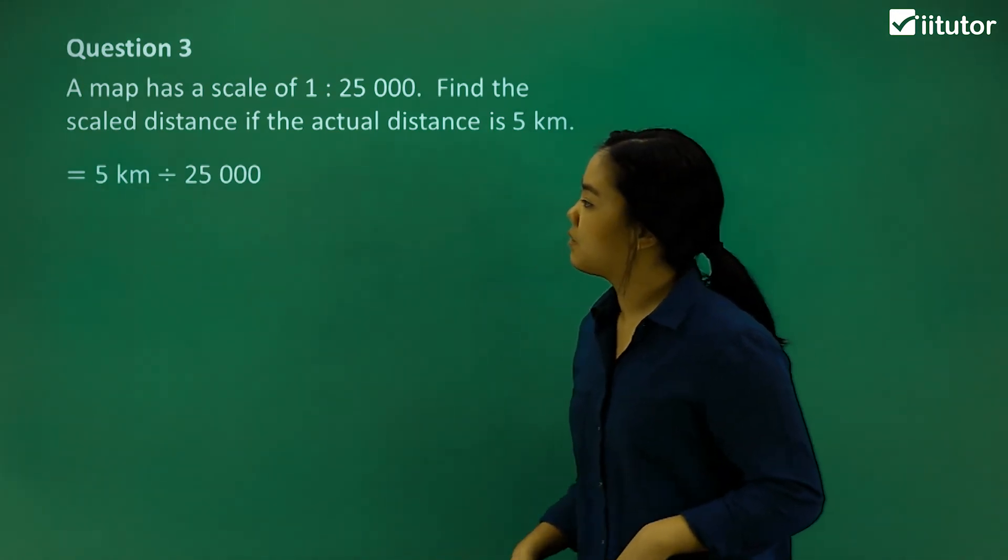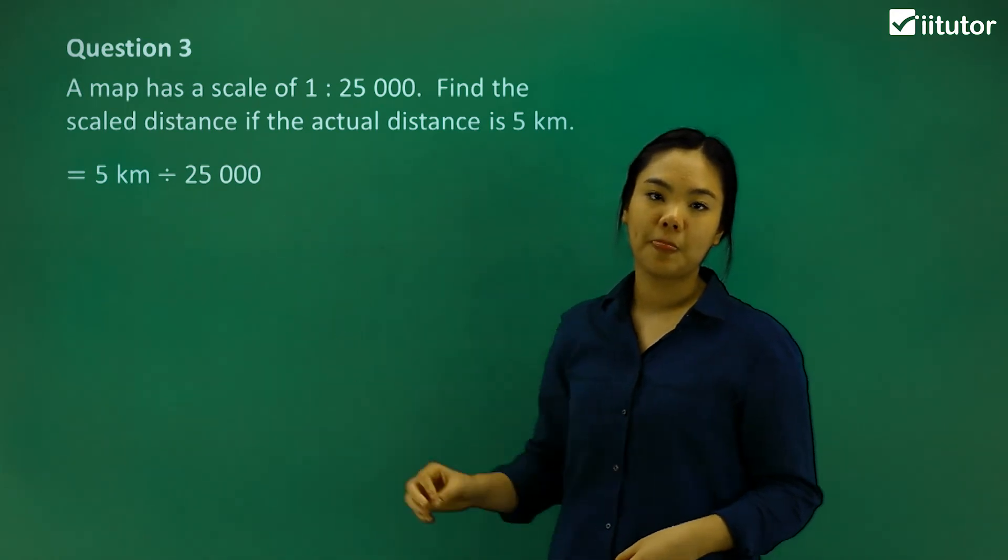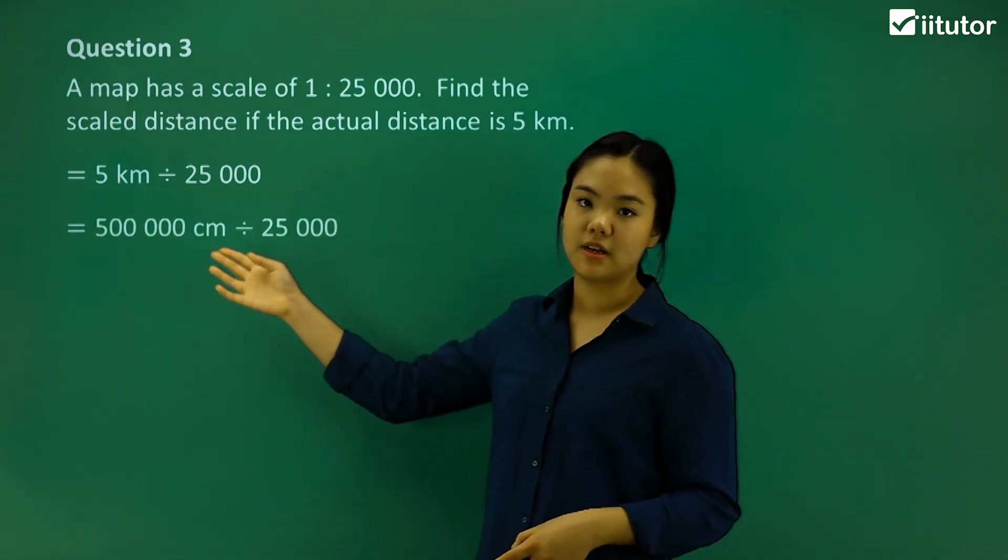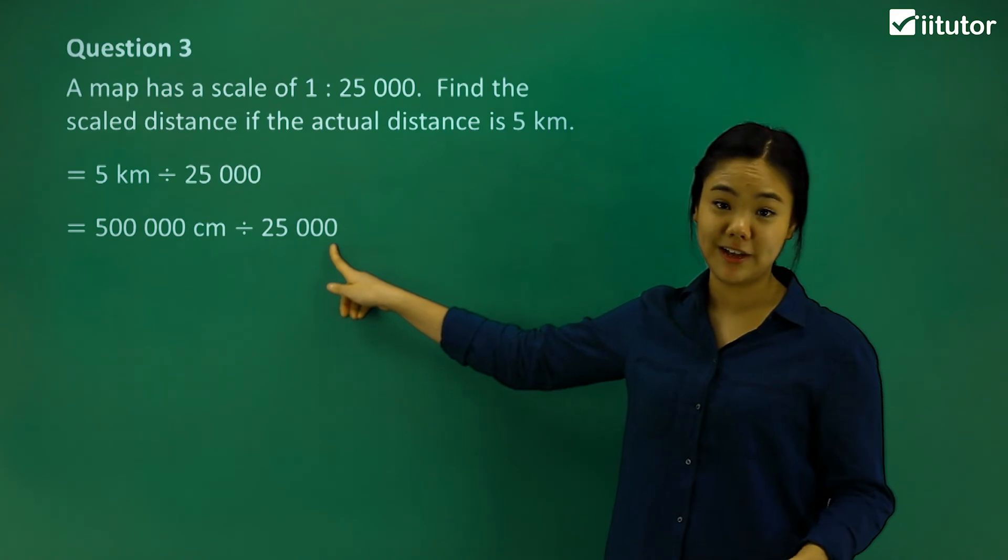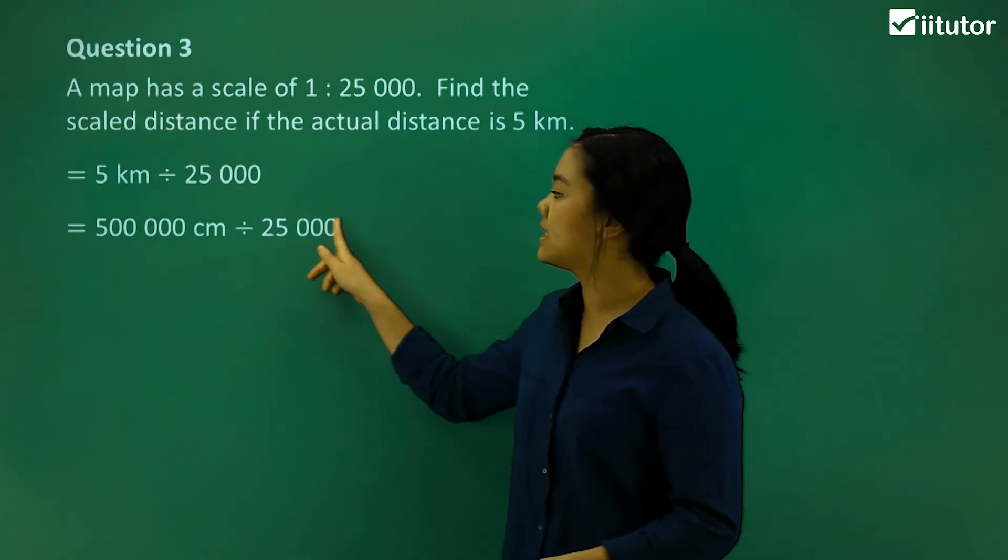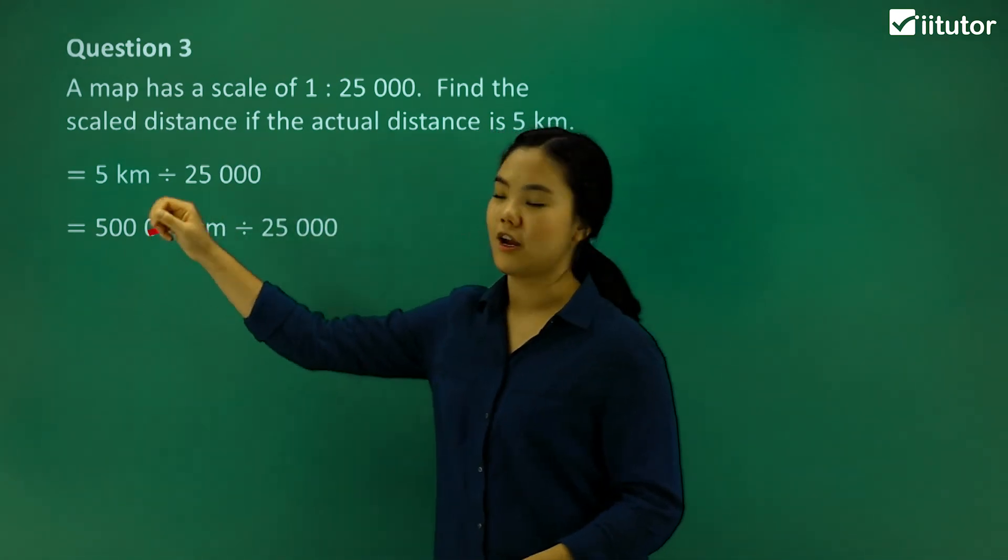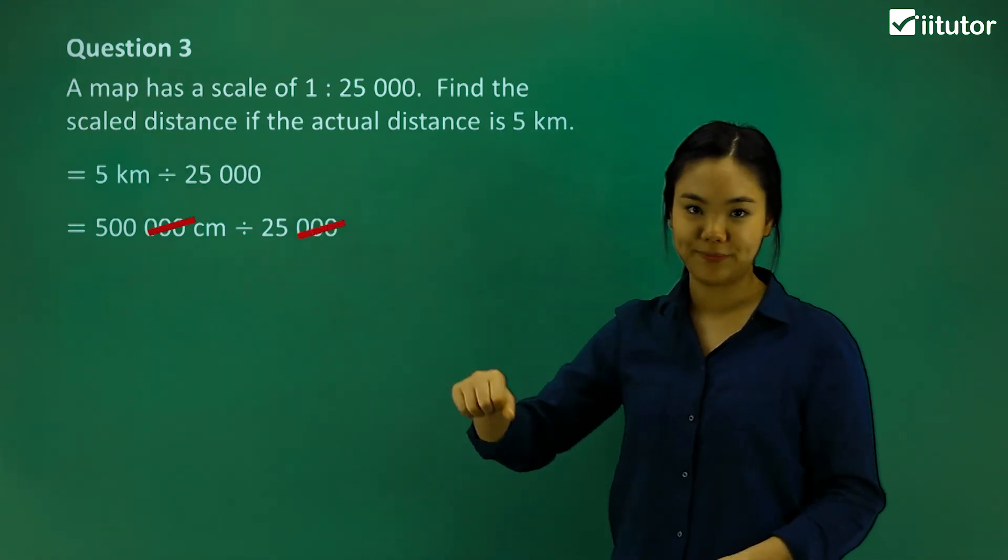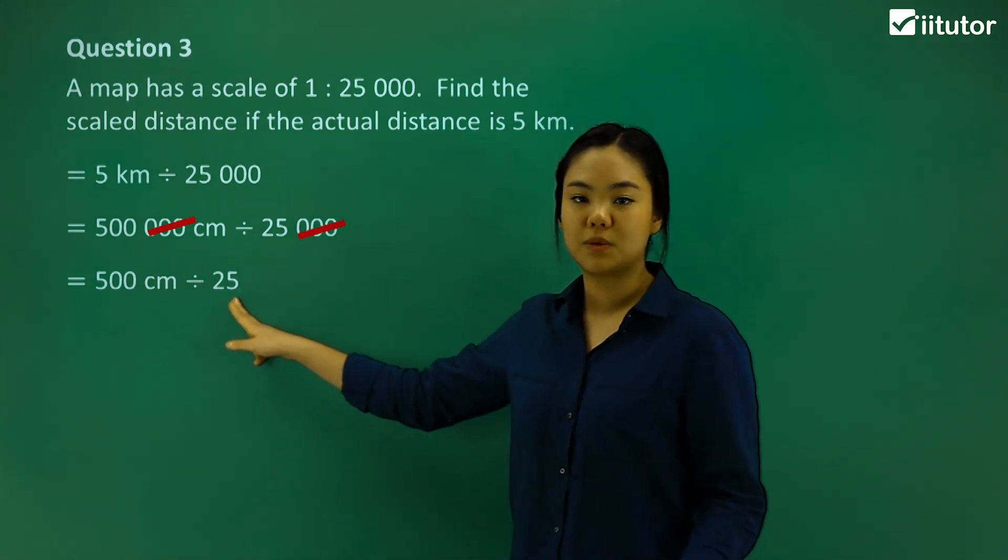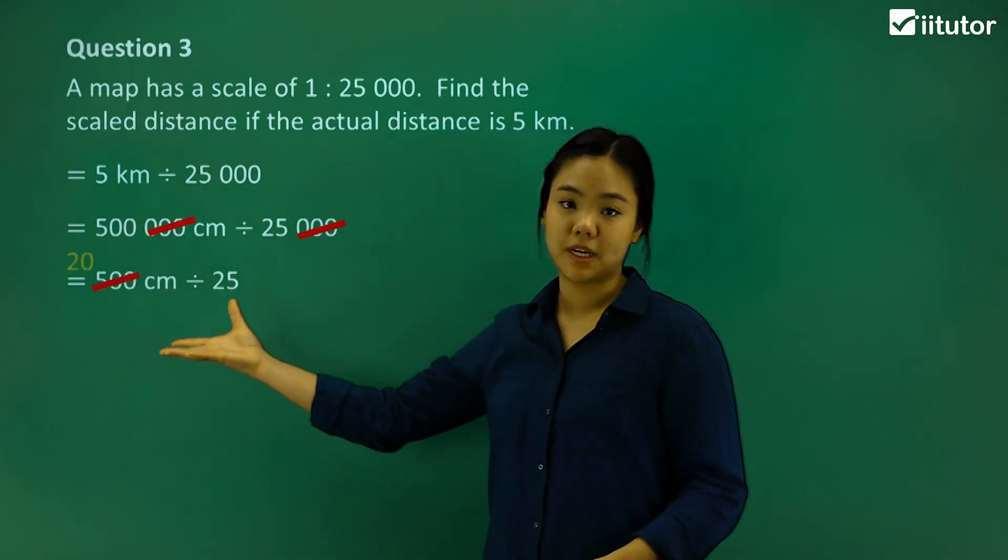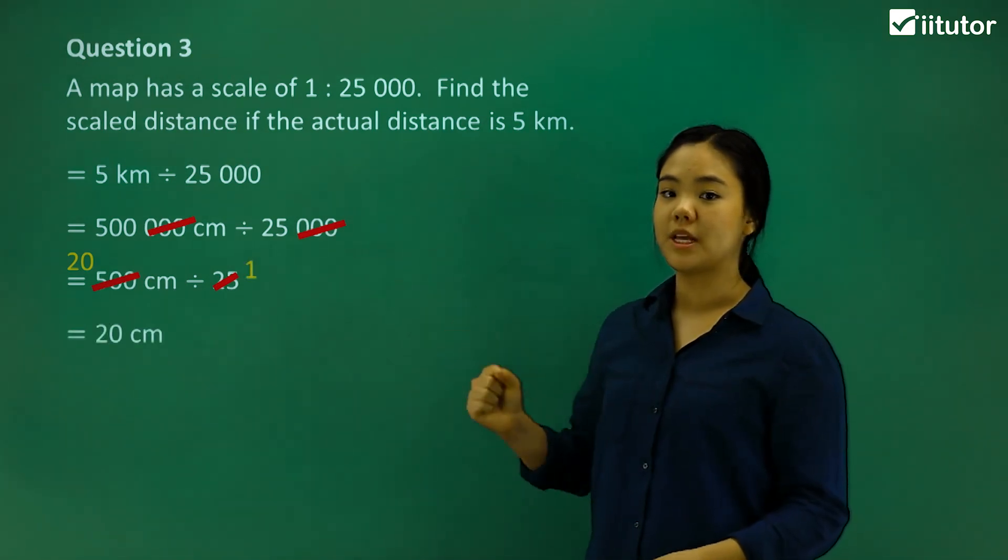We can change kilometers into a bigger number because we're dividing by 25,000. So we change it to centimeters. That's 500,000 centimeters divided by 25,000. We want to simplify it further. We can divide each side by 1,000, so that's 500 and that's 25. So we get 500 centimeters divided by 25. We can simplify further by 25. That becomes 20 and that becomes 1. So the scale distance is 20 centimeters.